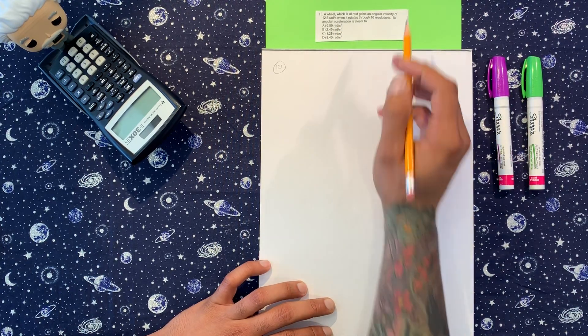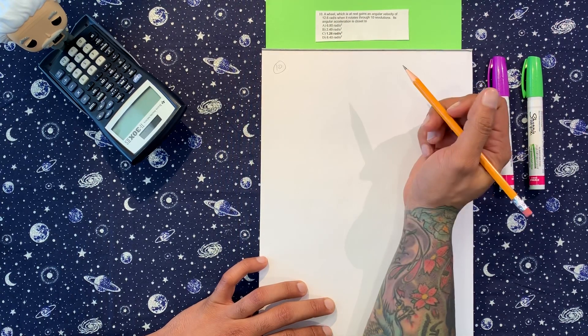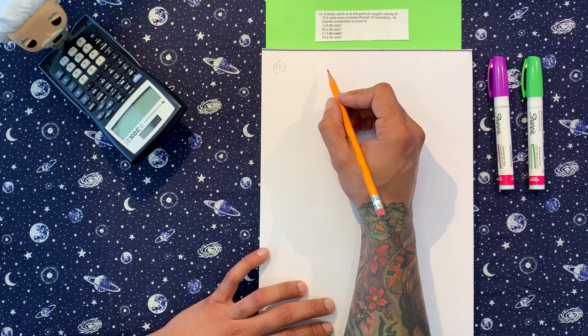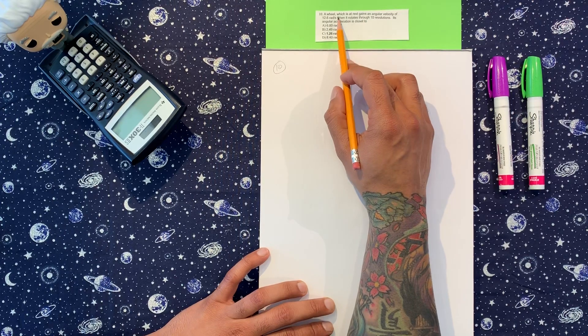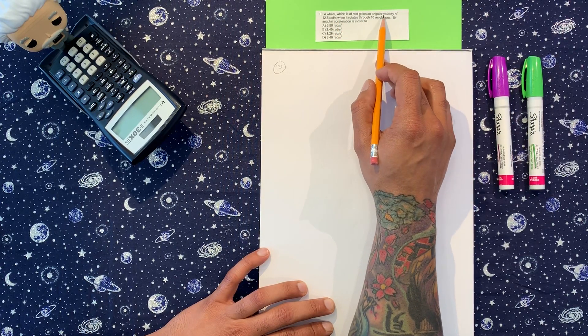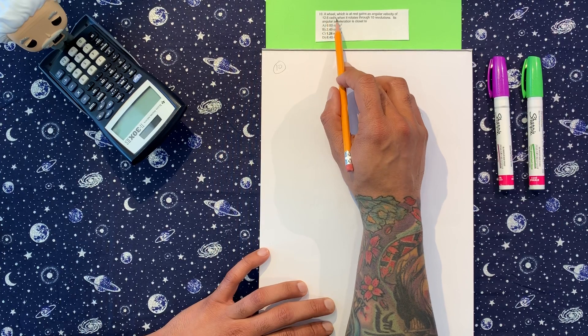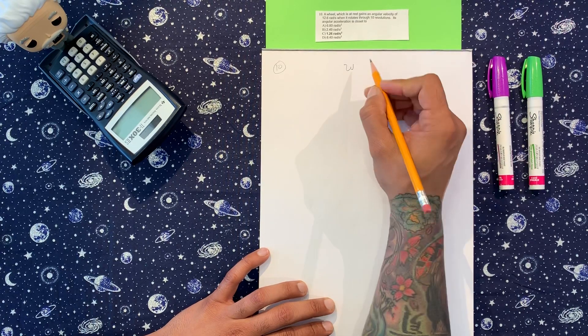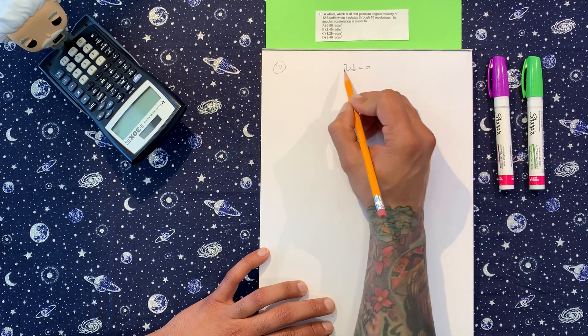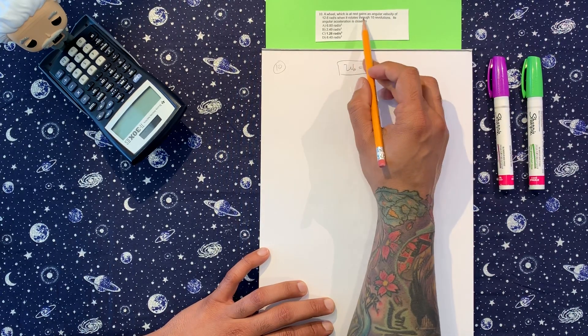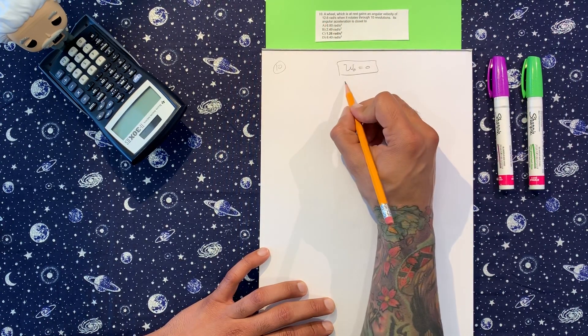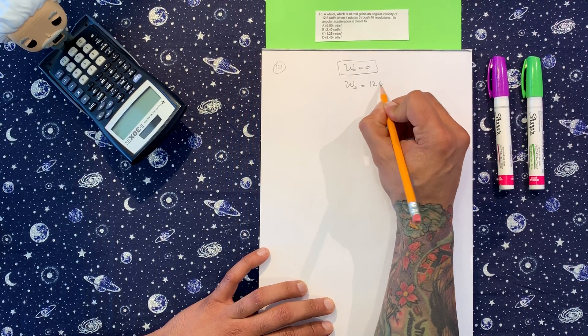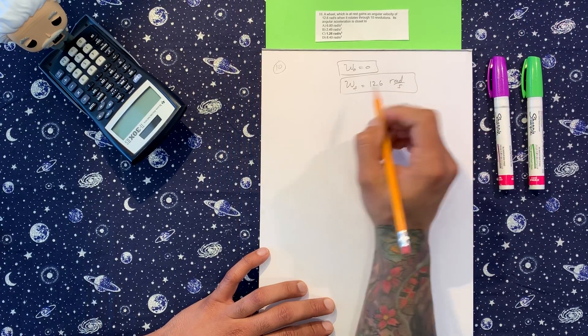This stuff, we're gonna need to know a couple things. First let's deal with this: which is at rest and gains an angular velocity of 12.6 rads per second. Something was at rest, so if we're talking about angular velocity, this is the symbol, and if it was at rest that means that this was zero. I could deduce that from the first part. Then it says it gains an angular velocity, so that must mean that angular velocity final is 12.6 rad per second.